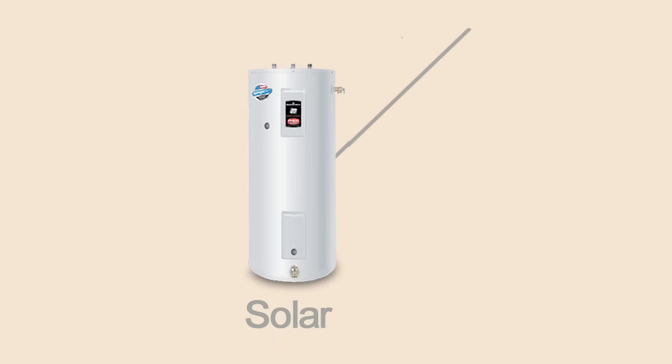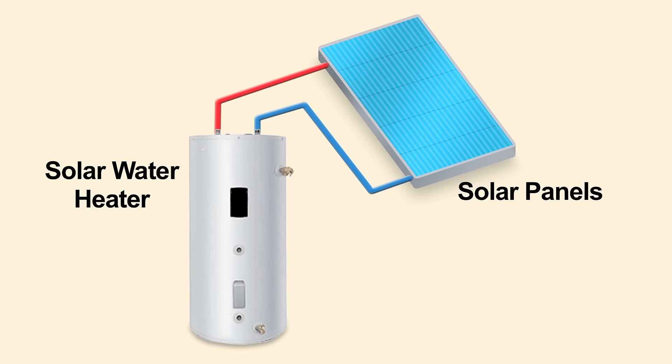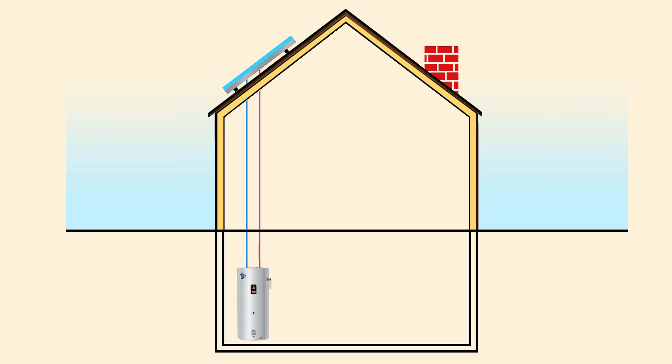Solar water heaters use the sun's heat to provide hot water. Solar heating systems are composed of solar panels or solar thermal collectors fastened to a roof facing the sun.